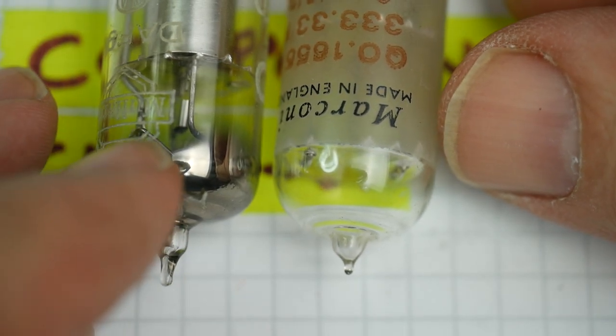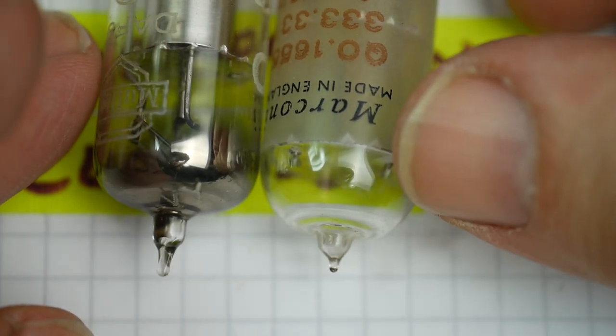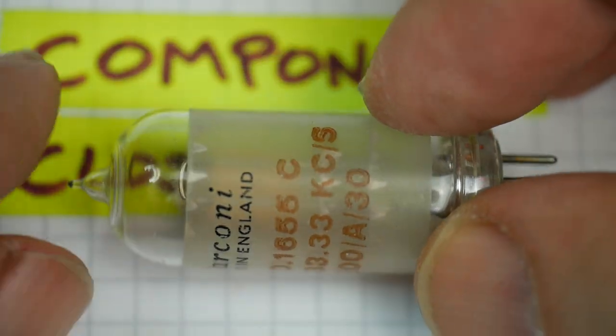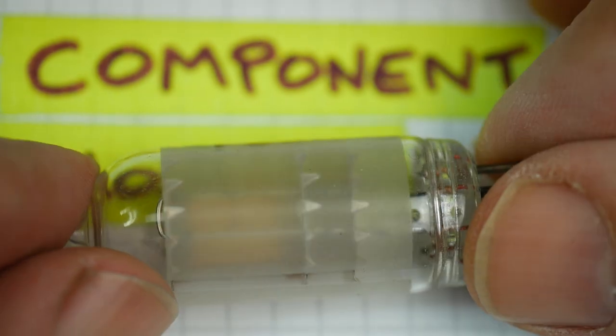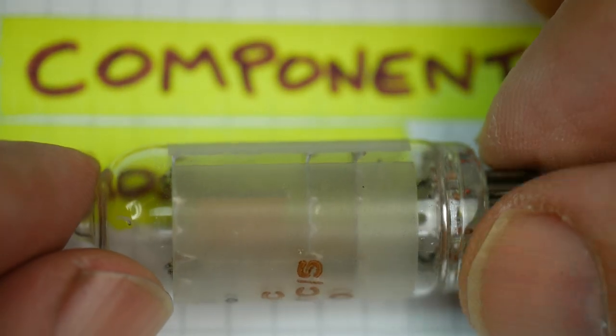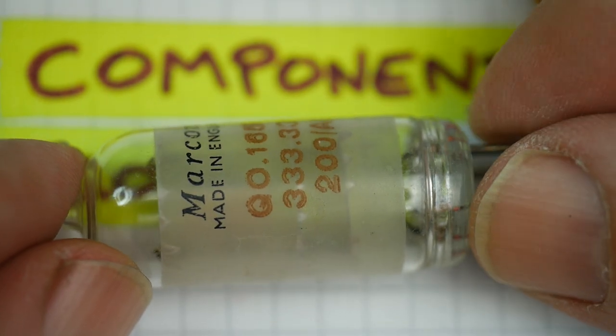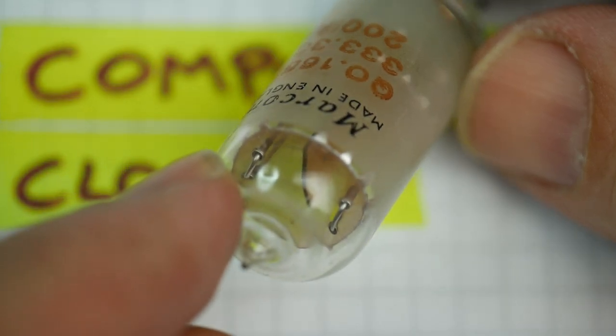But look at the top there. The valve has got the silver getter material on the inside of the glass. This thing hasn't. It's clear. So this thing hasn't got a vacuum in it - that's fairly reasonable to assume. It's a shame they've made that kind of frosted effect all around it, because we really can't see the inside of it.